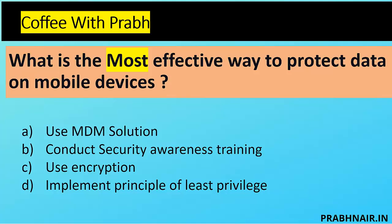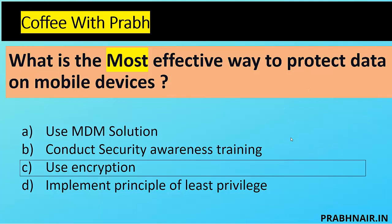Next coffee shot: what is the most effective way to protect data on mobile devices? Key keywords: 'most' means mandatory and 'data' is the focus. Option A - MDM solution - is great for managing devices but will not be most effective in case of device loss. Option B - security awareness training - gives no guarantee due to employee mistakes. Option C - use encryption - makes the most sense. Option D - principle of least privilege - can help stop attacks but encryption is the most effective control, even when a device is lost, because the data remains protected. The answer is C.